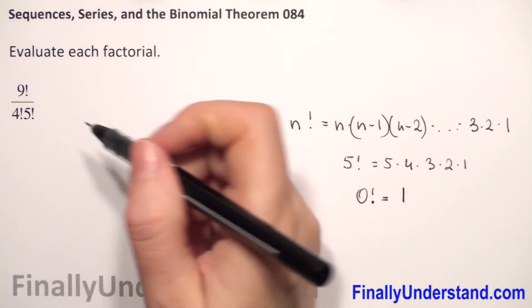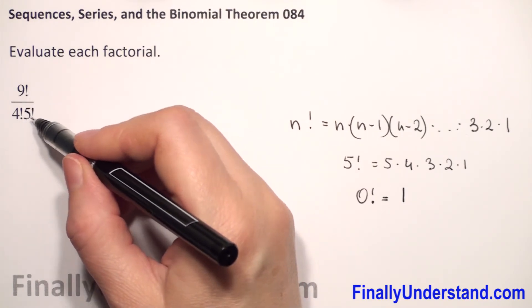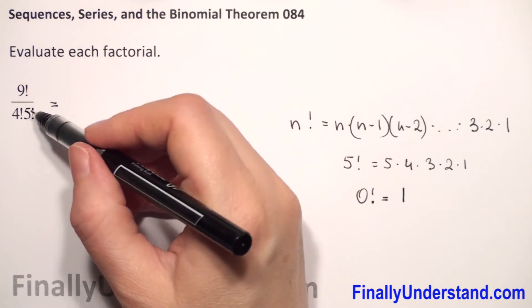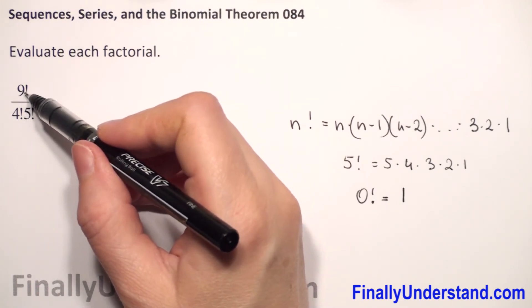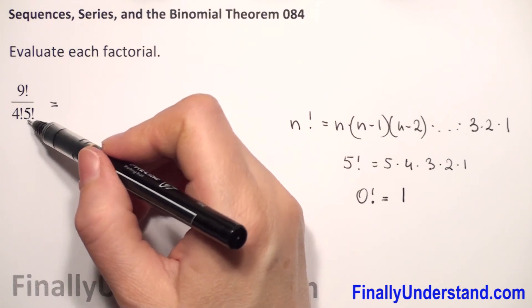Let's go to our example. We have 9 factorial over 4 factorial times 5 factorial. Because we have in the numerator 9 factorial and in the denominator the larger factorial is 5 factorial.